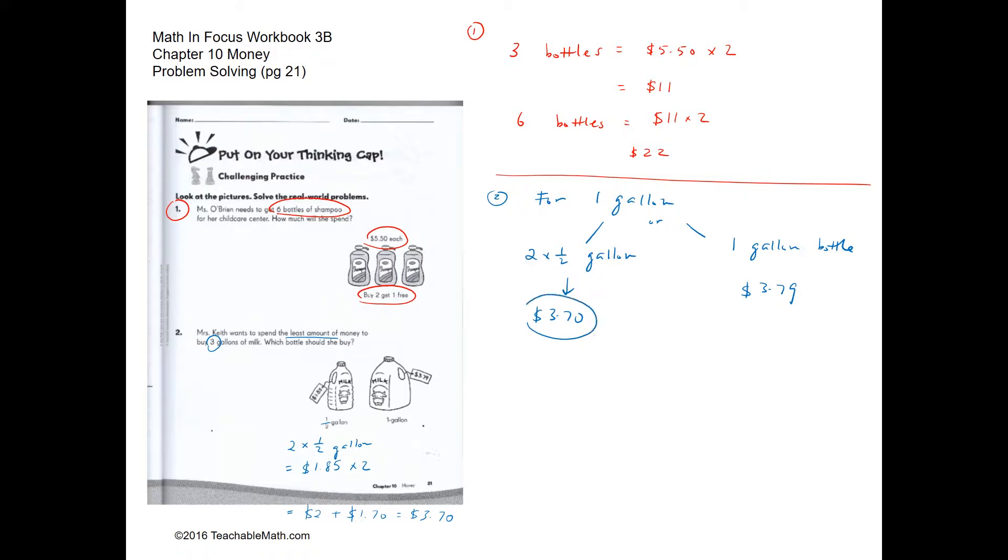Or we can buy a one-gallon bottle, which should cost $3.79. Since getting two half-gallons is cheaper, we should definitely be buying the half-gallon bottles. For three gallons, to get three gallons of milk, we should be getting six half-gallon bottles of milk.